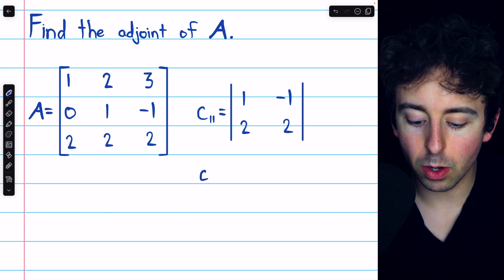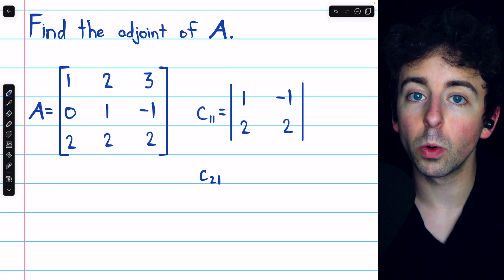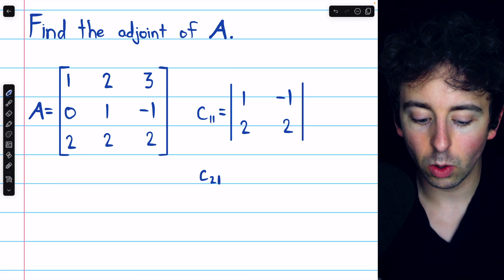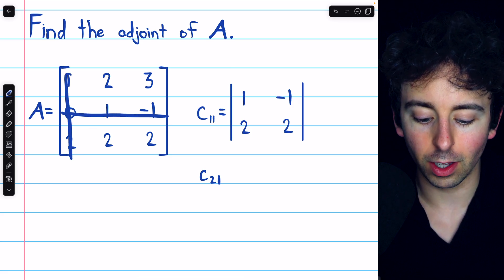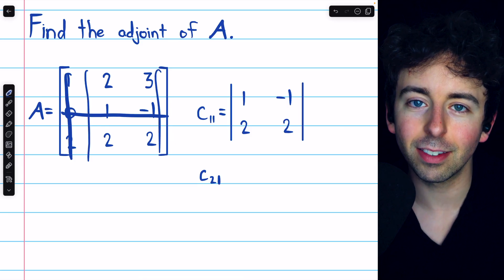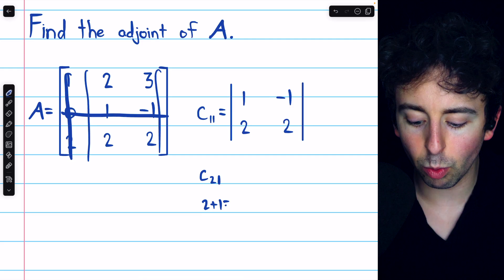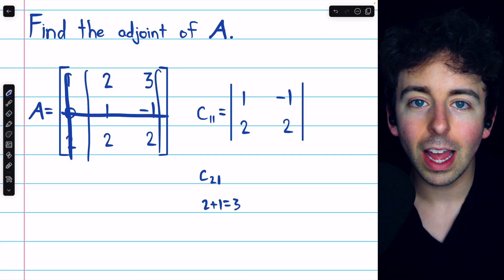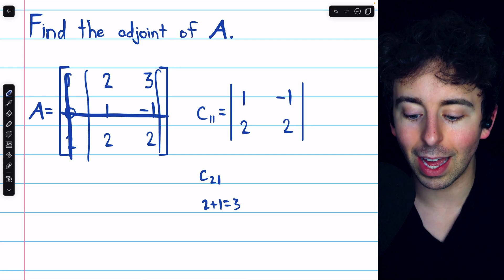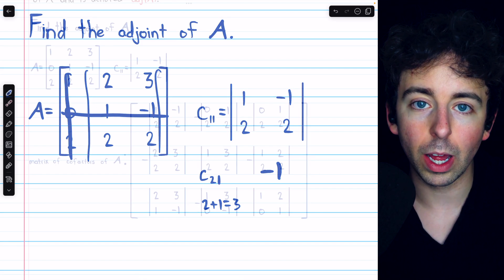But if, for example, we were computing the cofactor in row 2 and column 1, we would eliminate this row and this column and compute the determinant of that submatrix, and then we would also note that 2 plus 1 is 3, which is an odd number, and so we would have to multiply the determinant by a factor of negative 1.